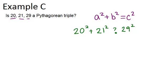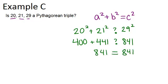So let's do this. 20 squared is 400, and 21 squared is 441. 29 squared is 841. 400 plus 441 is 841. So we can see that actually both sides are equal. So that means this is a Pythagorean triple because it works with the Pythagorean theorem.